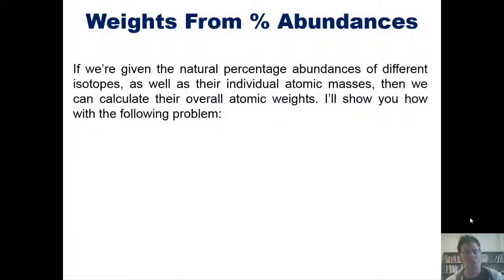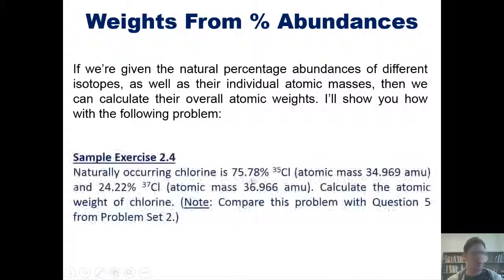Now, if we're given the natural percent abundances of different isotopes, as well as their individual atomic masses, we can then calculate their overall atomic weights. I'll show you how with the following problem. Naturally occurring chlorine is 75.78% chlorine-35, which has this atomic mass, and 24.22% chlorine-37, which has this atomic mass. Calculate the atomic weight of chlorine.